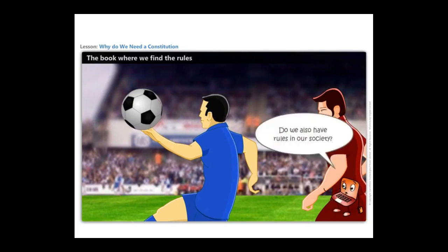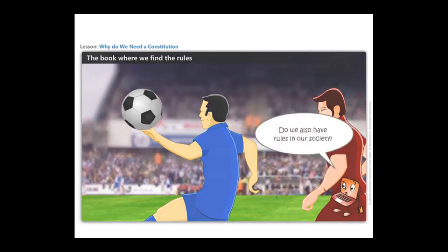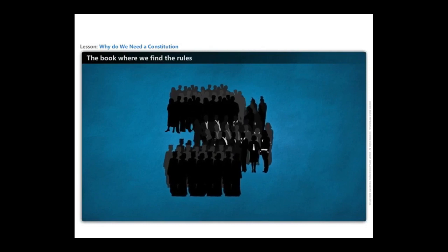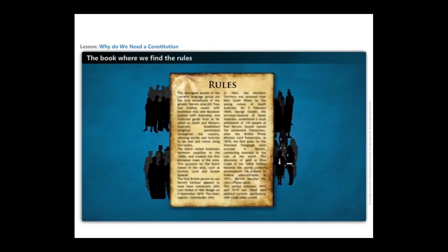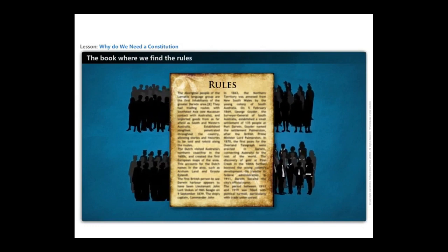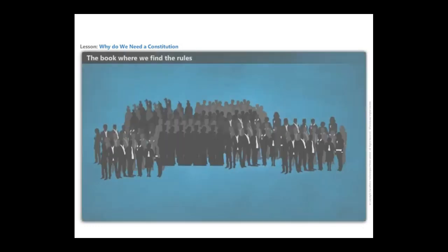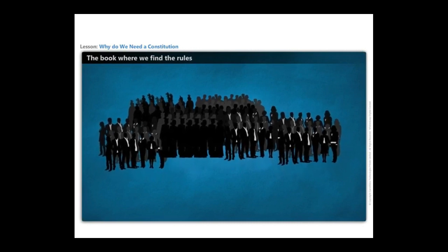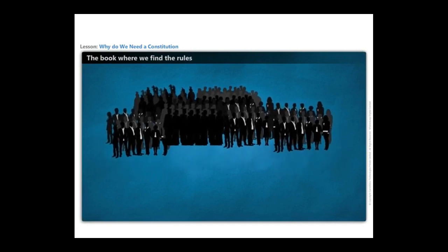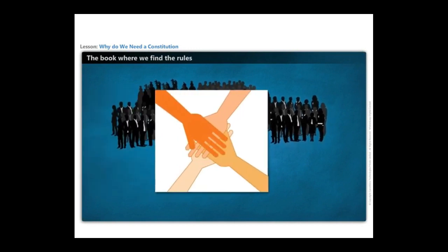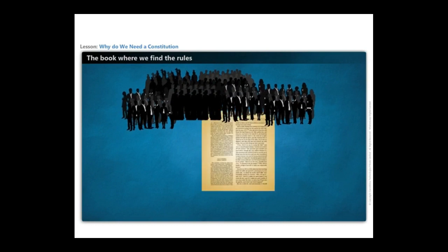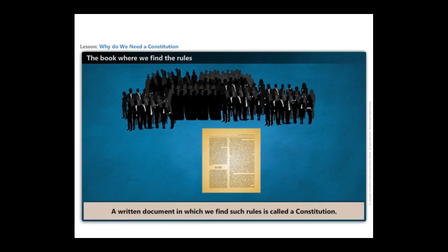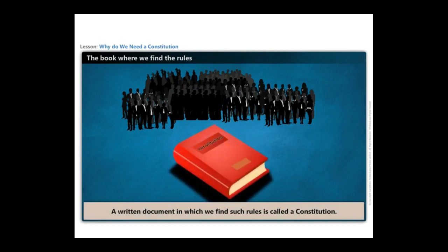Do we have such rules in our society? Yes, like these games, a society also has constitutive rules that make it what it is and differentiate it from other kinds of societies. In large societies in which different communities of people live together, these rules are formulated through consensus, and in modern countries this consensus is usually available in written form. A written document in which we find such rules is called a constitution.